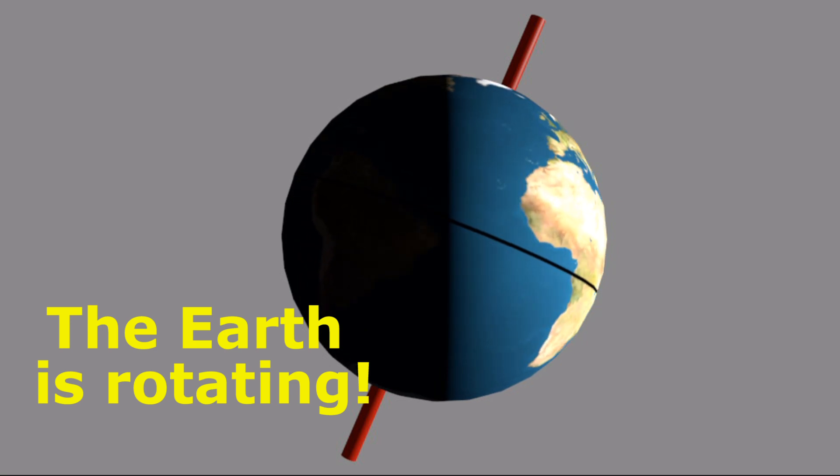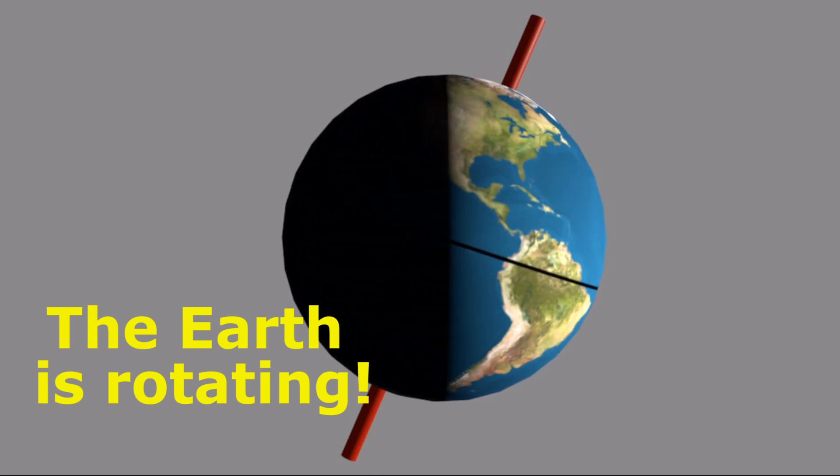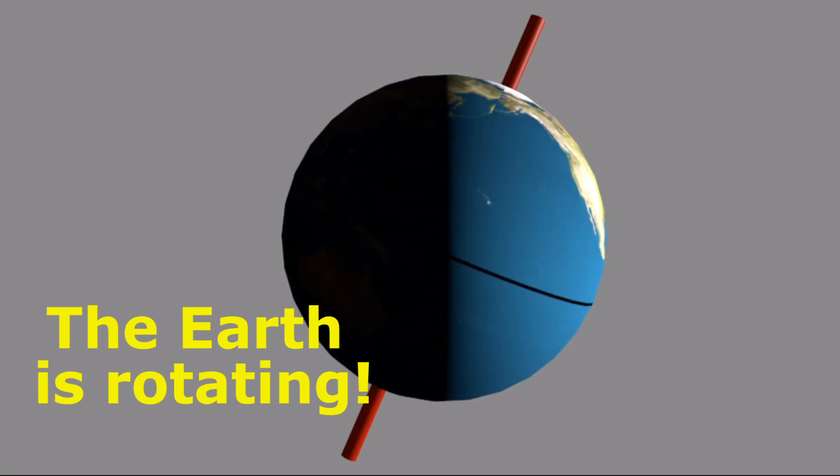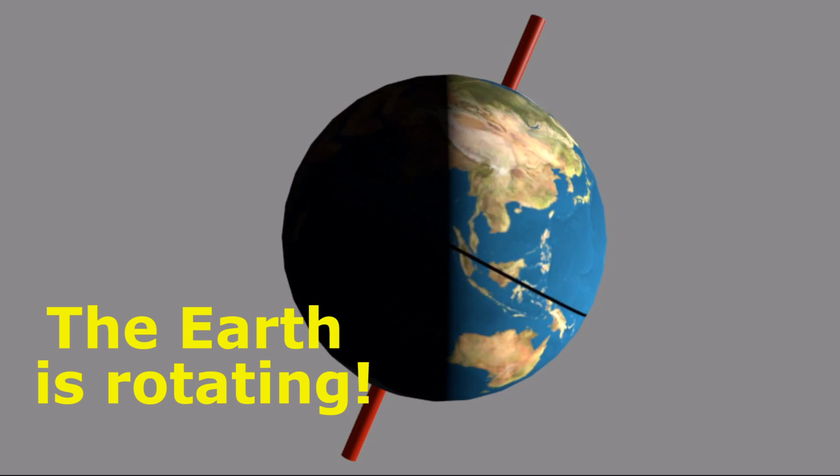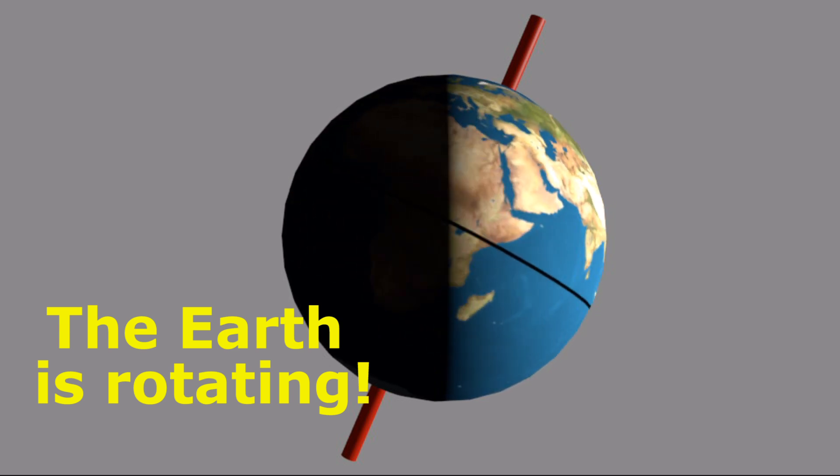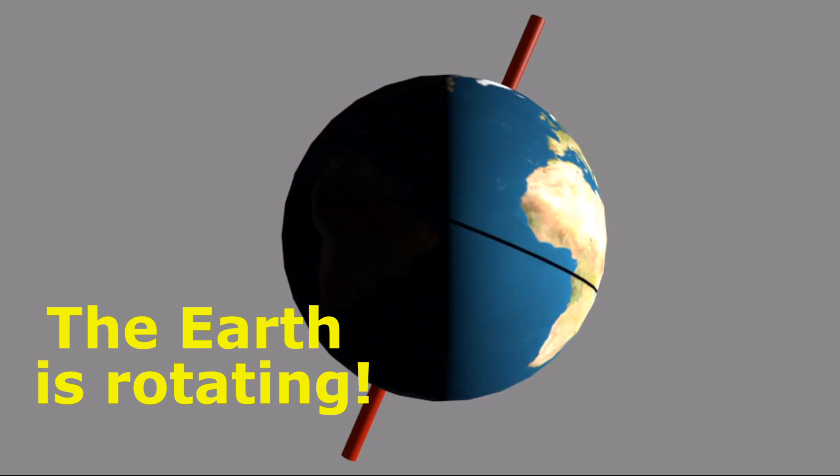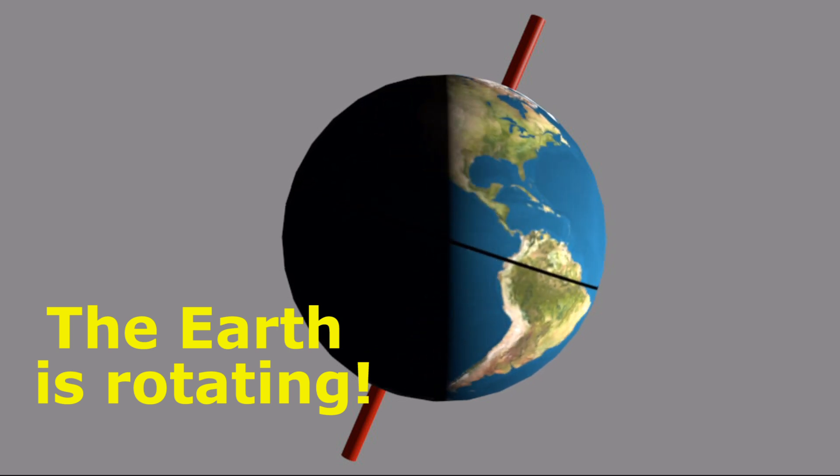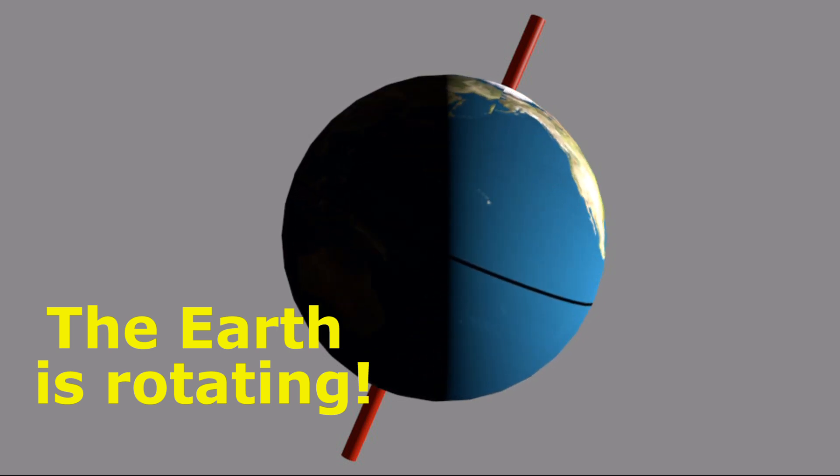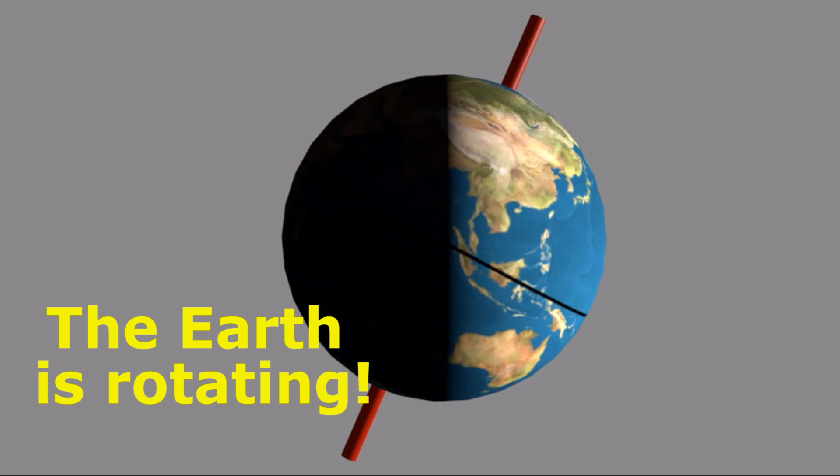The Earth is rotating. This means that it is spinning on its axis like you see here. The rotation of the Earth causes many patterns that we see every day. To help you see the rotation of the Earth, I made this animation rotate much faster than the Earth actually rotates.